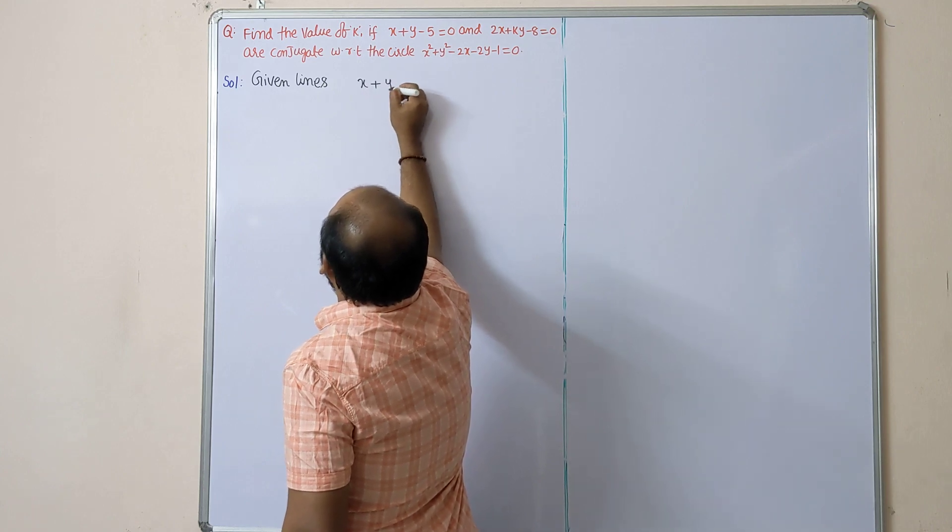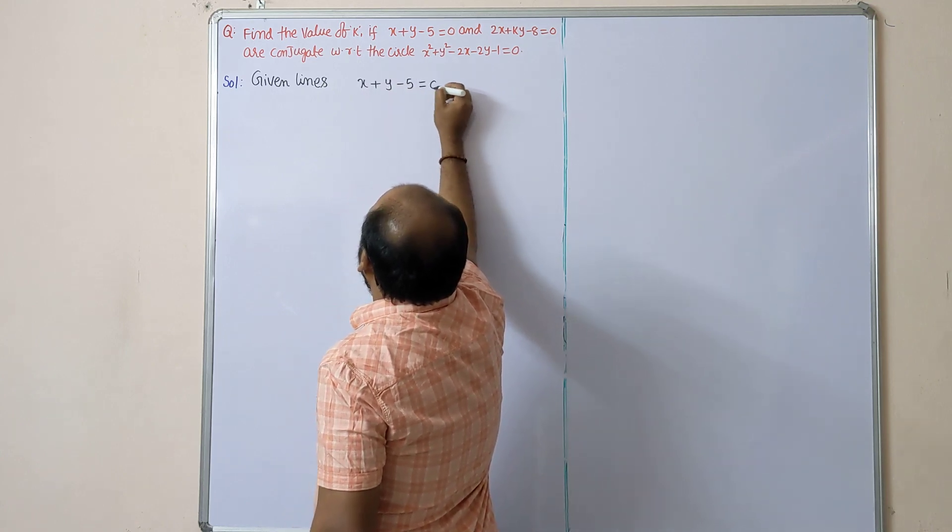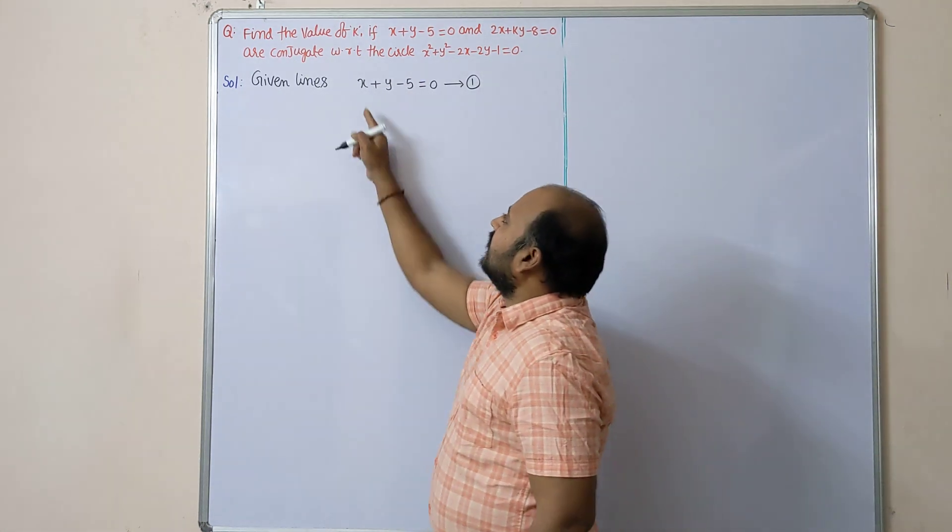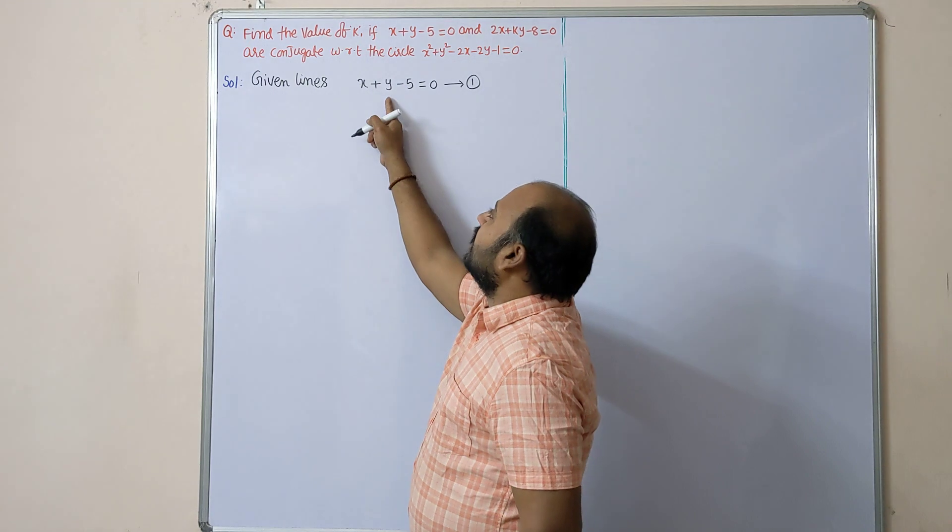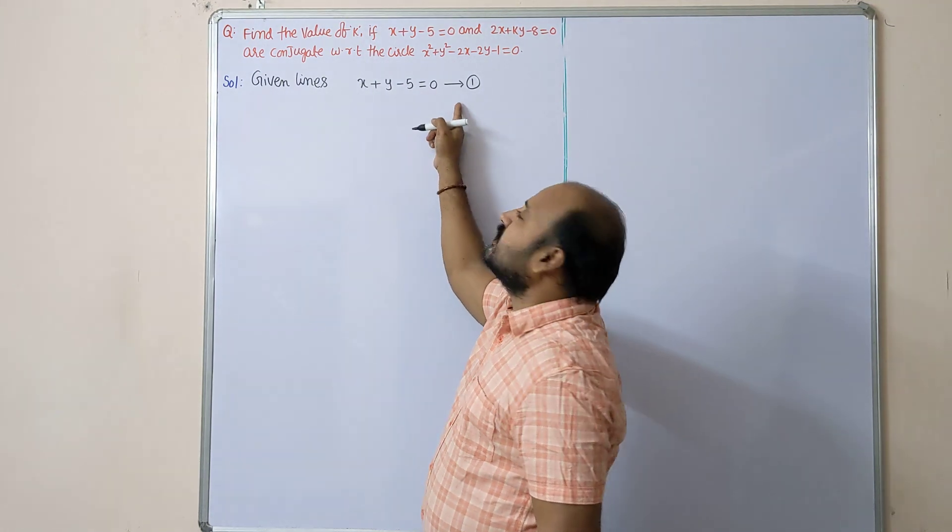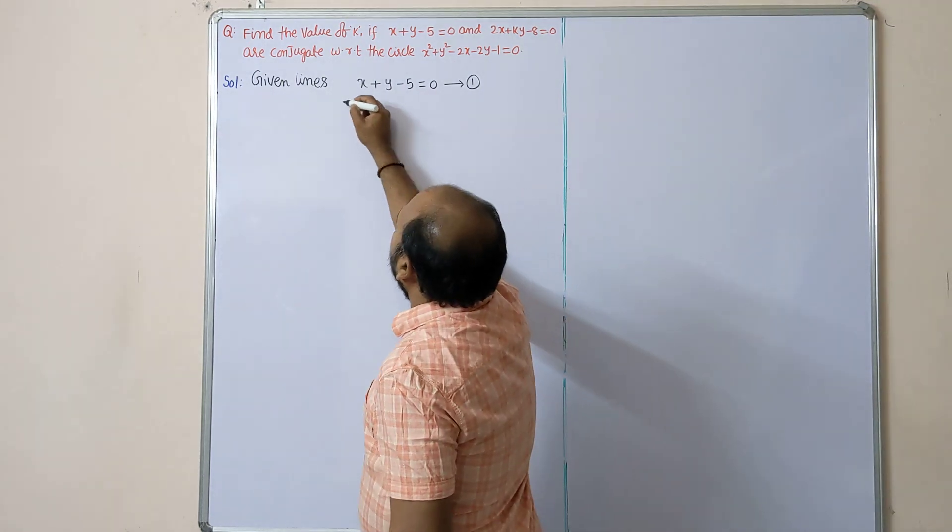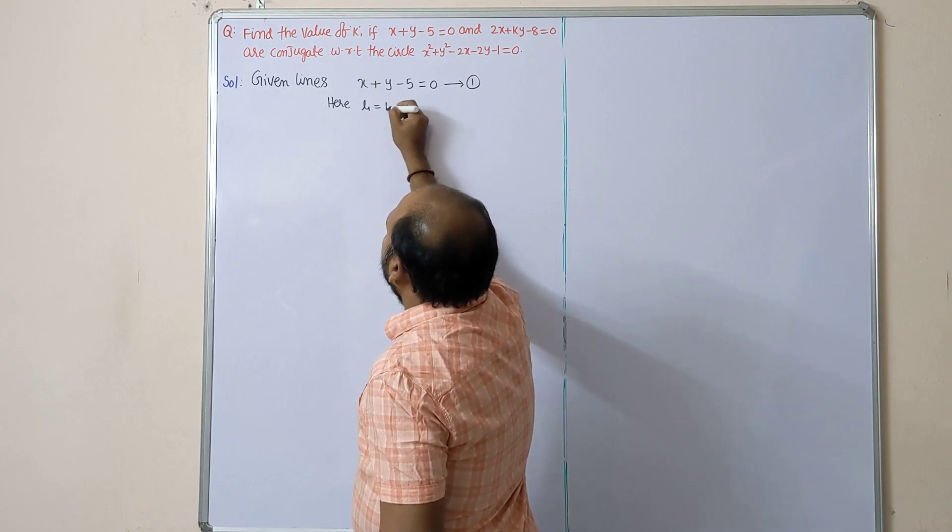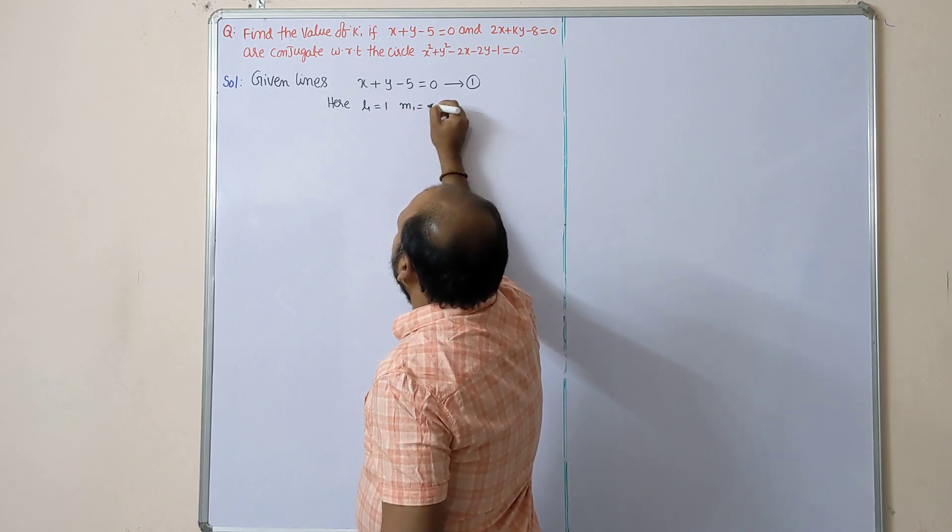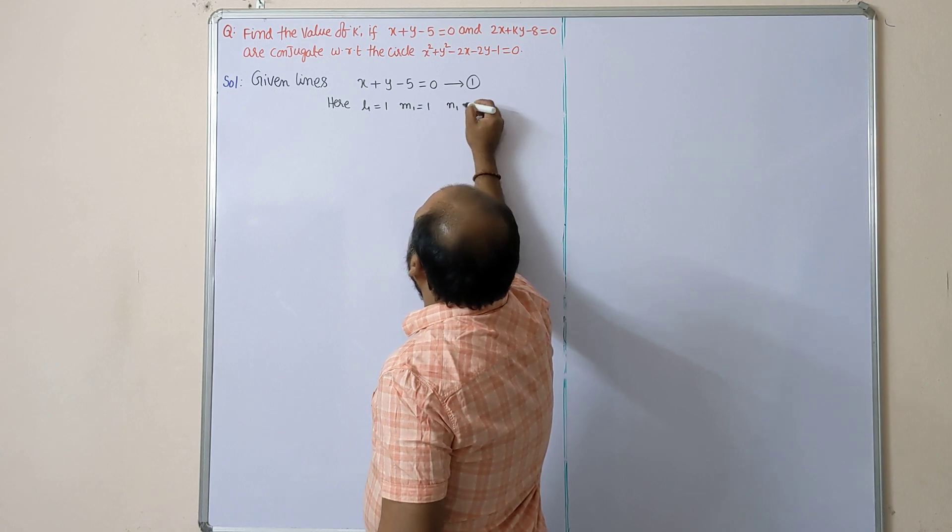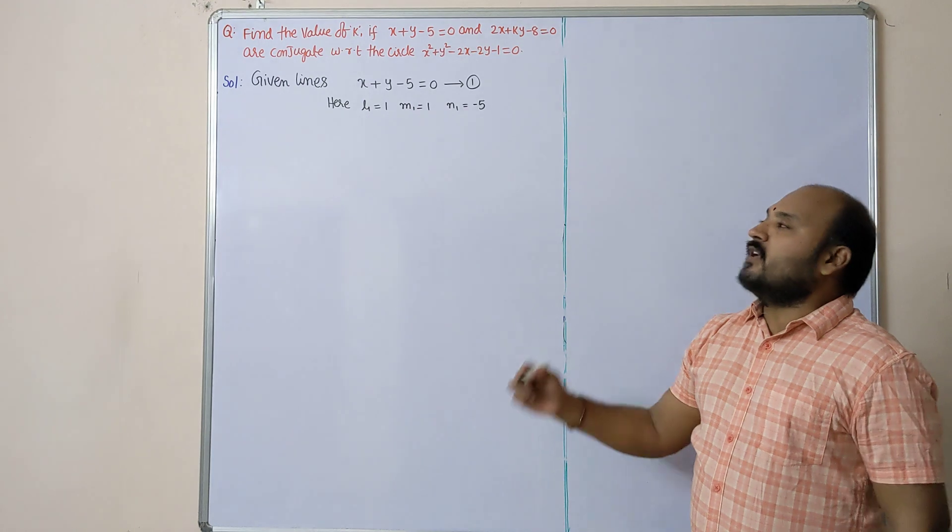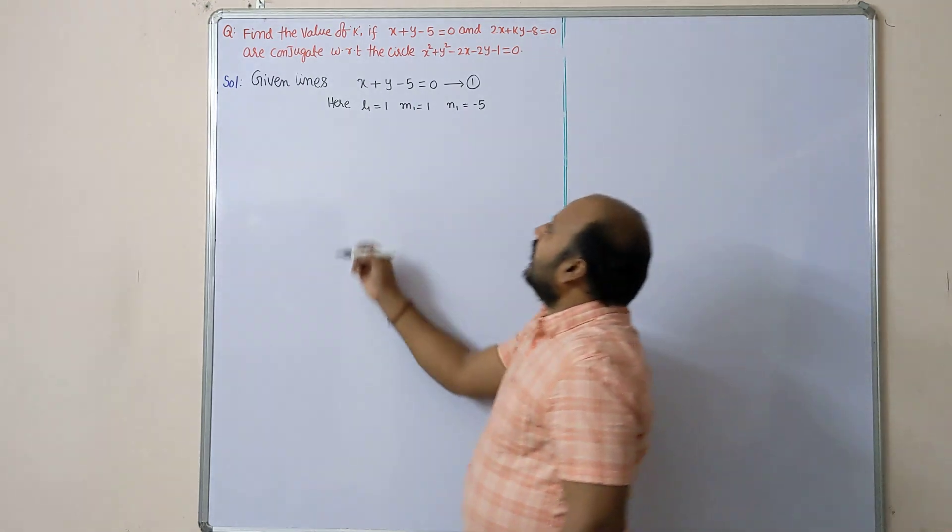Given lines: x + y - 5 = 0, keep that equation number 1. This you have to compare with l1x + m1y + n1 = 0. So here l1 = 1, m1 = 1, n1 = -5.